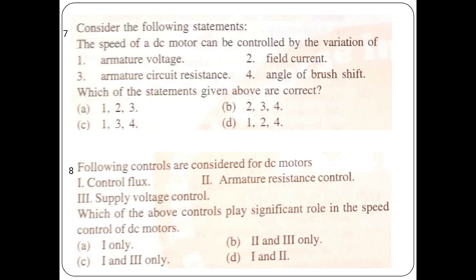Speed of a DC motor can be controlled by the variation of: armature voltage, field current, armature circuit resistance, and angle of the brush shift. The correct answer is 1, 2, 3. We know how to control the speed of a DC motor — three factors are: applied voltage to the armature terminals V, external resistance of the armature circuit, and flux per pole. The first two possibilities are involved in the armature circuit and the third involves change in the magnetic field. Statements 1, 2, and 3 are correct.